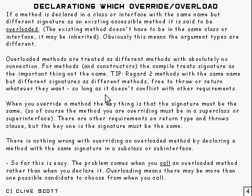You've got to have the name and the types. So it's best to regard two methods with the same name but different signatures as being different methods, because effectively they are. Each is free to throw or return whatever it wants. That's quite different to being overridden.